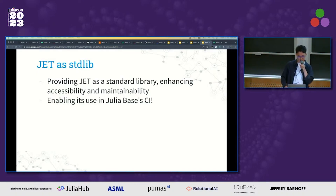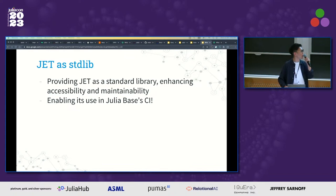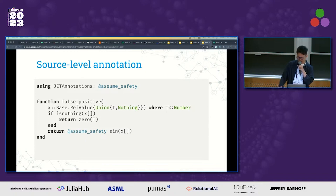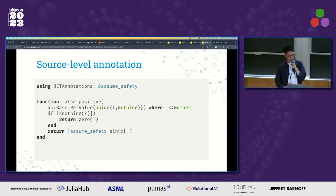Next, I'm thinking of porting JET to Julia base and making it available as a standard library. By doing so, we can improve accessibility and maintainability of it, and hopefully gain more users and contributors. Another plan is to implement source-level annotations in order to provide a more user-friendly configuration interface. Because implementing a perfect inference engine turns out to be impossible, in cases where something is essentially safe but JET wrongly reports a problem, it would be very handy to be able to silence JET using this kind of annotation.